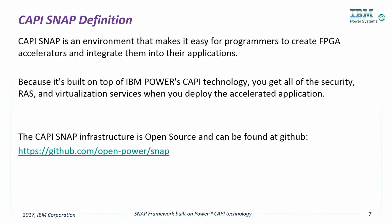With CAPI and now OpenCAPI, we have the best FPGA technology available in the industry. We deliver a base set of critical capabilities – server security, address translation and virtualization – on top of the highest bandwidth and lowest latency with PCIe Gen 4 and then the 25 gigabit per second OpenCAPI link. The challenge is turning this technology leadership into client value. For that, we need to enable the ecosystem to create accelerated solutions.